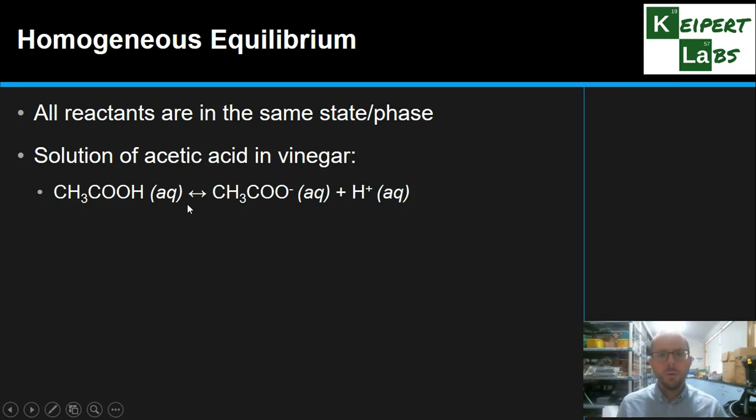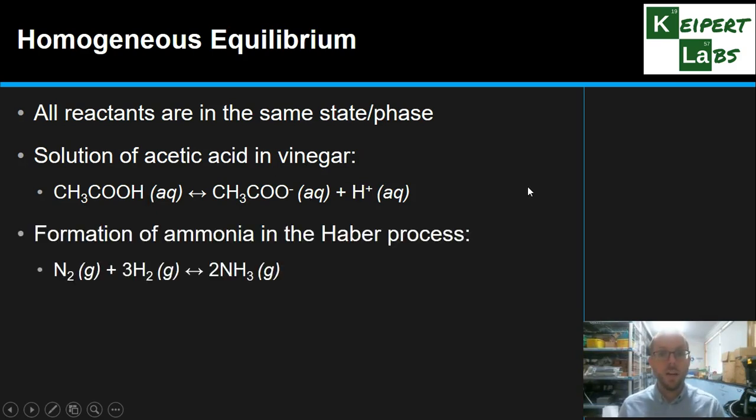And so we represent equilibrium with this double headed arrow. This idea that we can take an acetic acid molecule and split it into ions. Sometimes we will take these ions and combine them to go back this way. Another example is the formation of ammonia, NH3, in the Haber process, a particular important industrial reaction. All of these substances are in the gas phase. So it is a homogenous equilibrium. We're in equilibrium between nitrogen and hydrogen gases and ammonia as the product. Again, the double headed arrow to represent equilibrium.